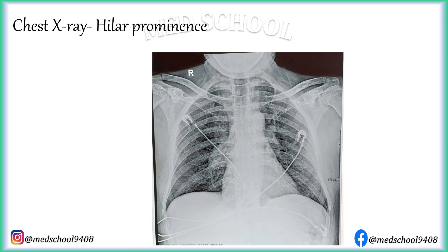Let's understand the importance of clinical correlation from this x-ray. The right hilum is prominent, but it is very difficult to know the exact cause. But if the patient is paraplegic with recently diagnosed deep venous thrombosis and has sudden onset of hypoxia, hypotension and tachycardia, then he is most likely a case of pulmonary embolism, and this prominence is nothing but a dilated pulmonary artery.